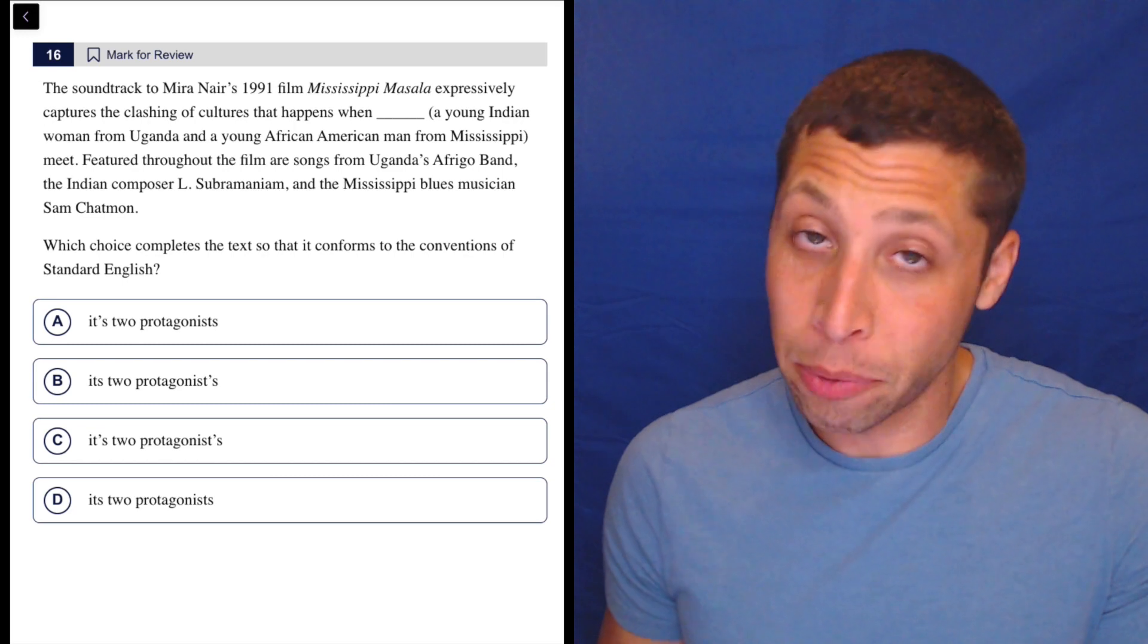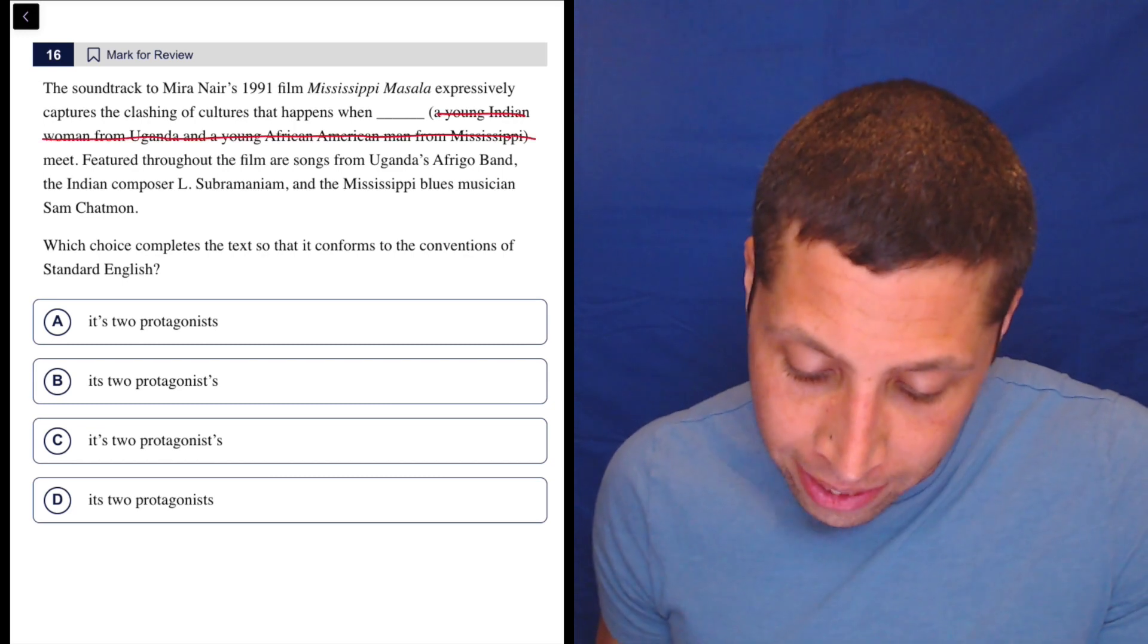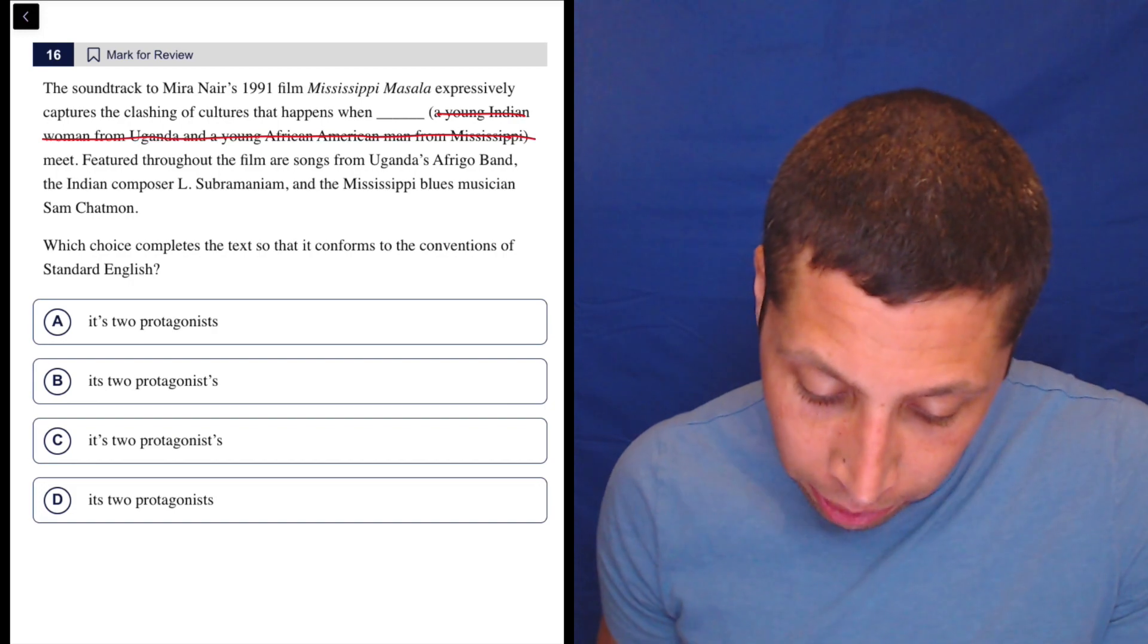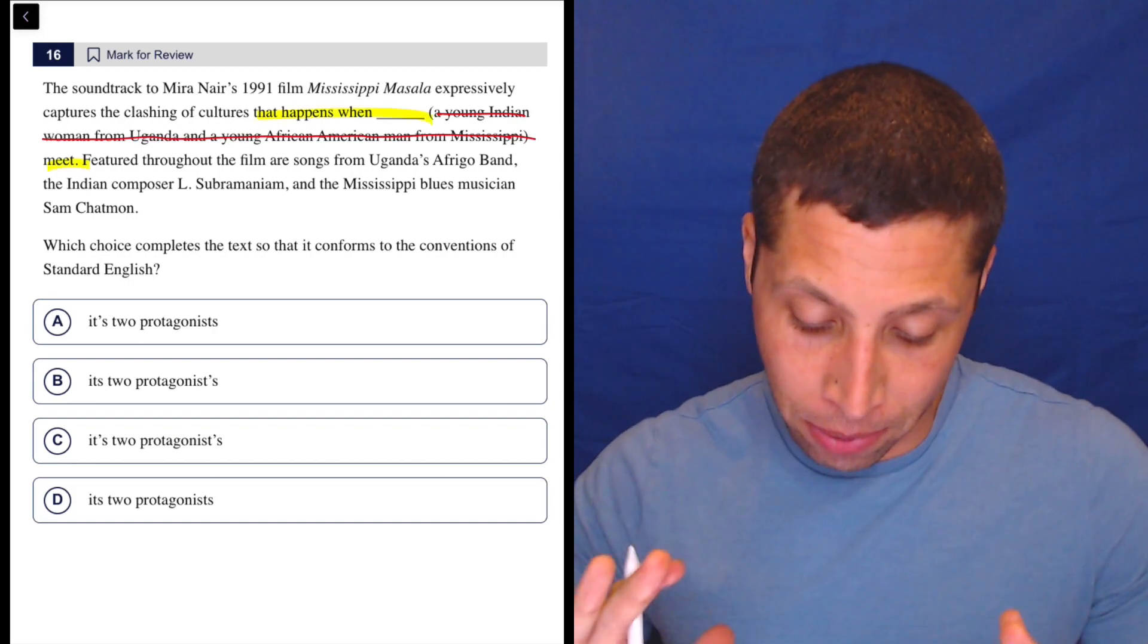So first of all, I see what they did there. They're just kind of messing with you. Let's get rid of this, right? It's in parentheses, that means it's extra, so let's just try to follow here. Okay, that's the sentence. Let's not let them interrupt us.